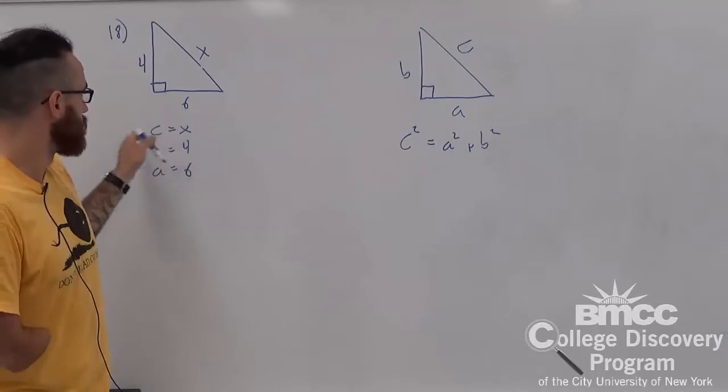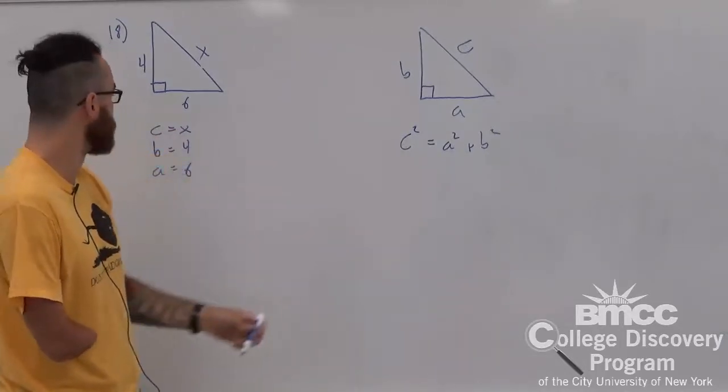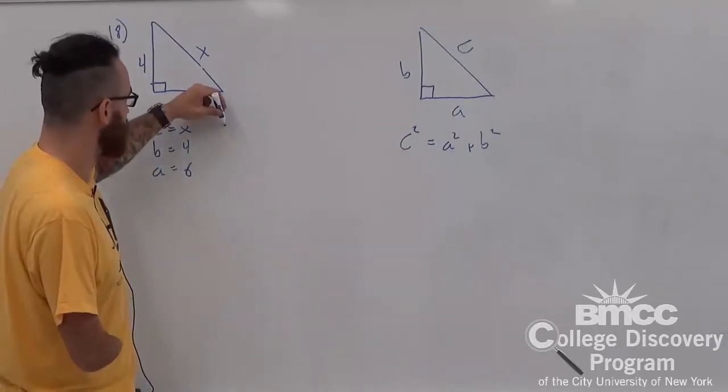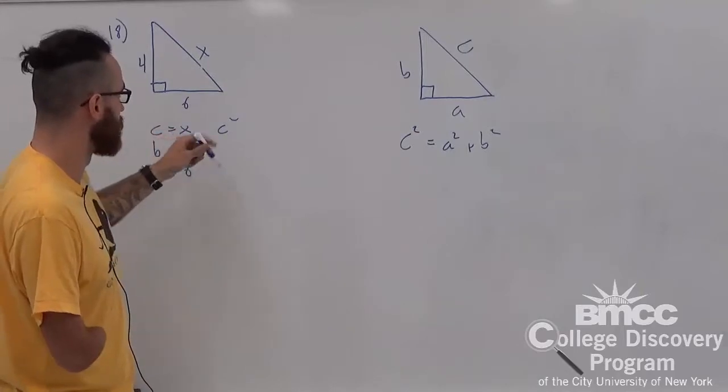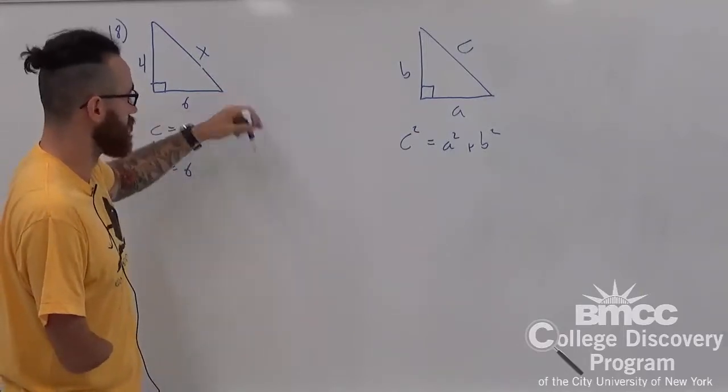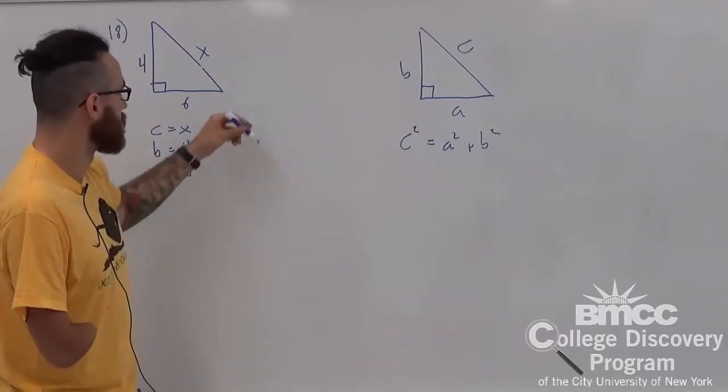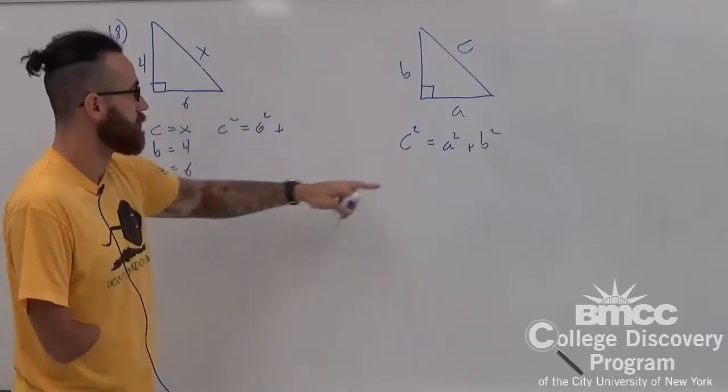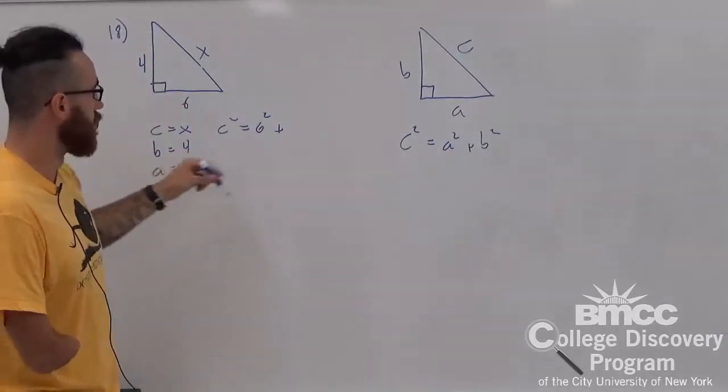Now, just plug it in the same way. So, c squared, or x, is equal to a squared, which is 6, plus b squared, 4.